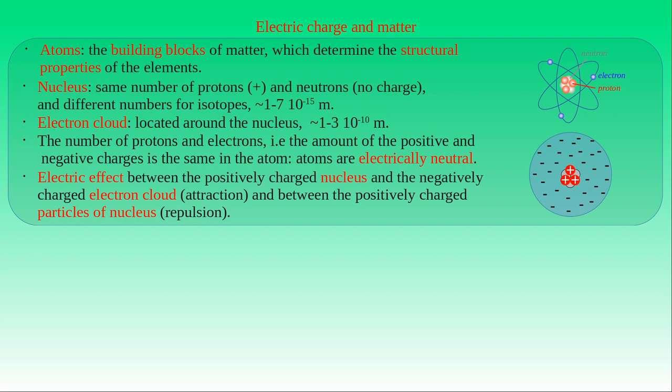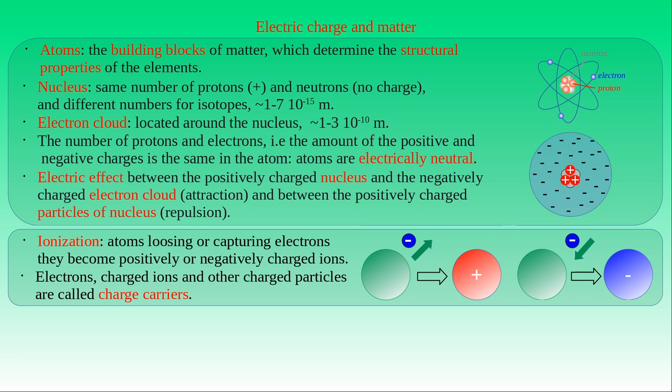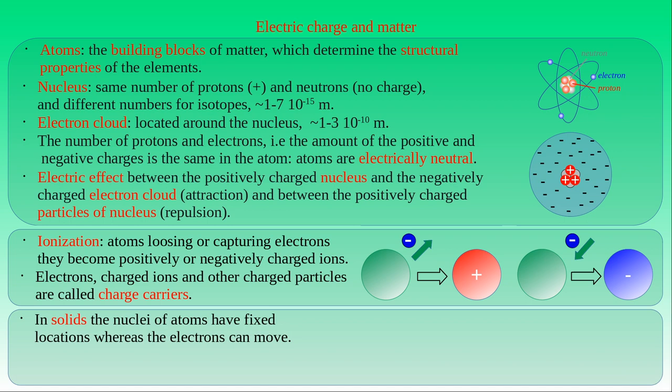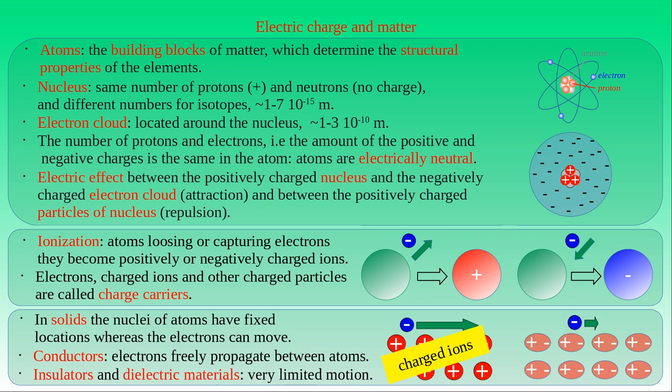There is an electrostatic attraction between the positively charged nucleus and the negatively charged electron shell. There is also a repulsion between the electrons in the shell, and such repulsion exists between protons in the tightly packed nucleus as well, but the attraction due to nuclear forces is much stronger, which keeps these particles together. Due to ionization, atoms losing or capturing electrons become positively or negatively charged ions. Electrons, charged ions, or other charged particles are called charge carriers. In solids, the nuclei of the atoms have fixed locations, whereas the electrons can move in these materials. In the case of metals, the valence electrons can freely propagate between the atoms, and when they leave their atoms, the atoms become charged ions. In insulators and dielectric materials, the electrons have very limited motion, so their atoms can only be polarized and become electric dipoles.